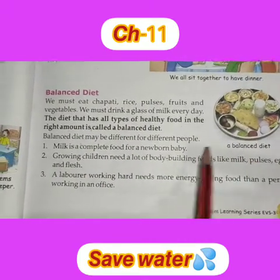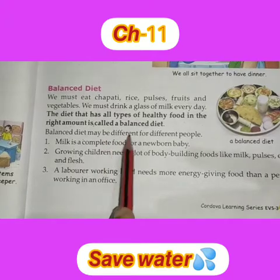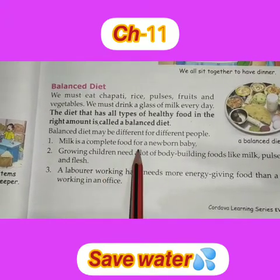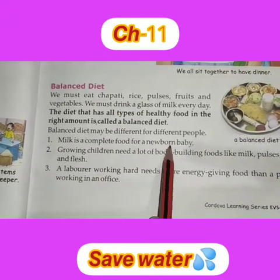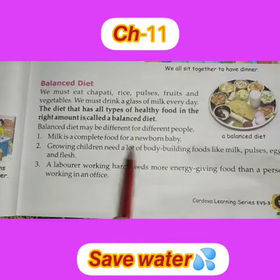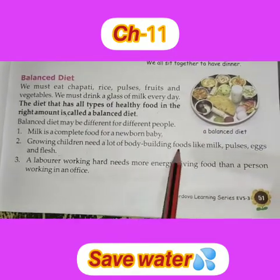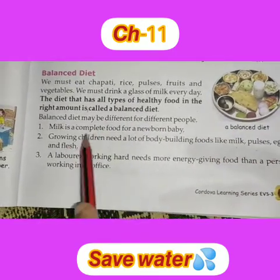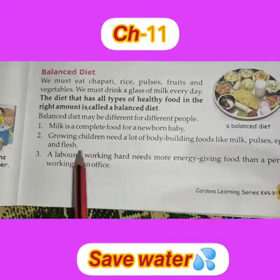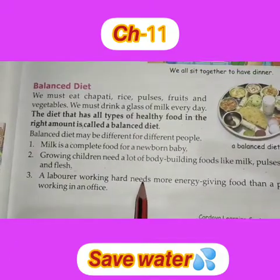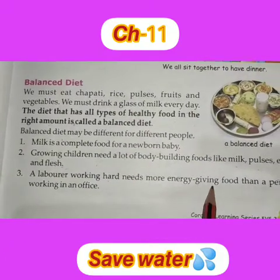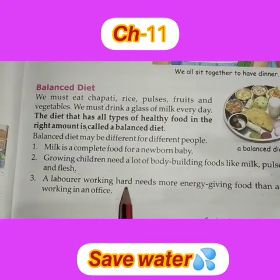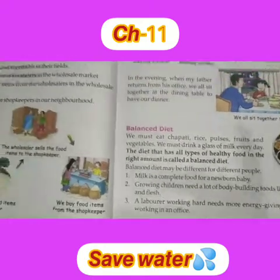Balanced diet may be different for different people. Milk is the complete food for a newborn baby. Growing children need a lot of body-building food like milk, pulses, eggs, and flesh. A laborer working hard needs more energy-giving food than a person working in an office.